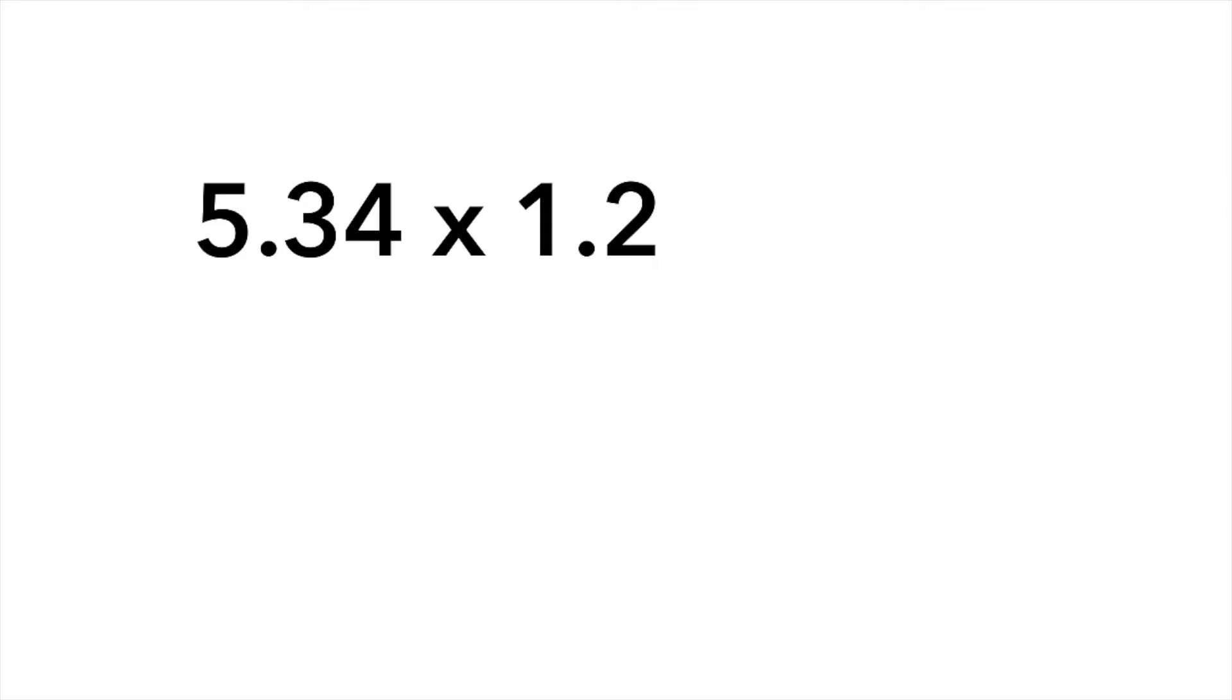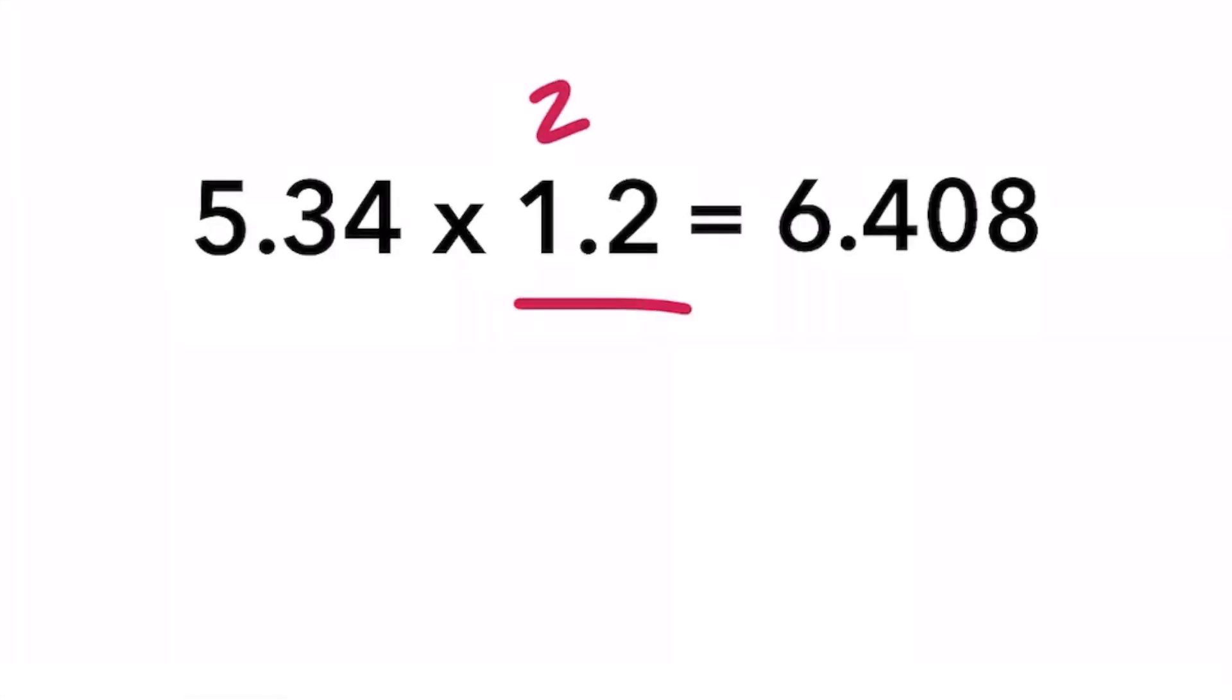For example, if you are multiplying 5.34 by 1.2, the unrounded answer is 6.408. The least precise term in our calculation is 1.2 because it only has 2 sig figs, whereas 5.34 has 3 sig figs, so our answer can only have 2 sig figs.